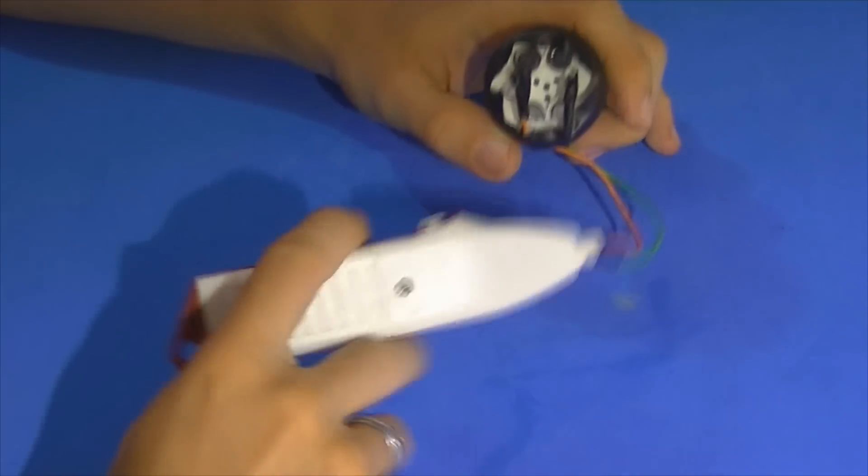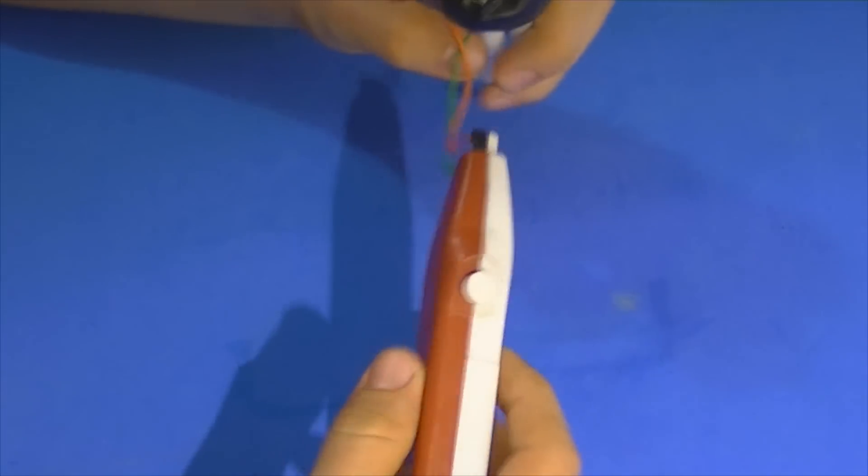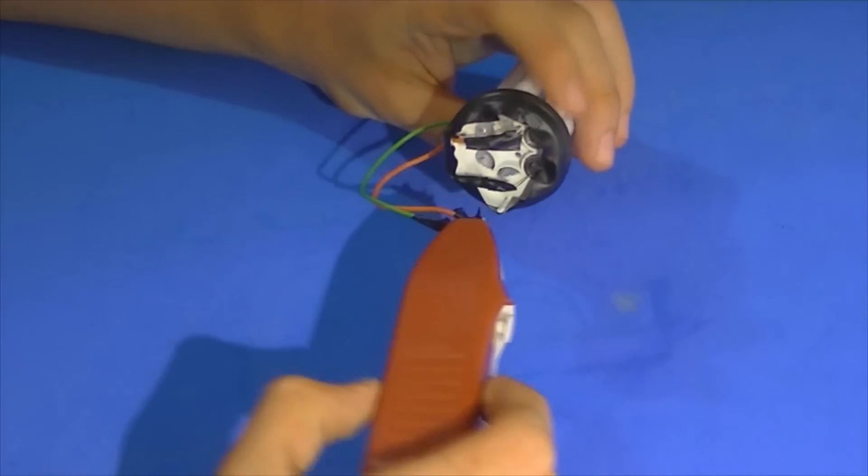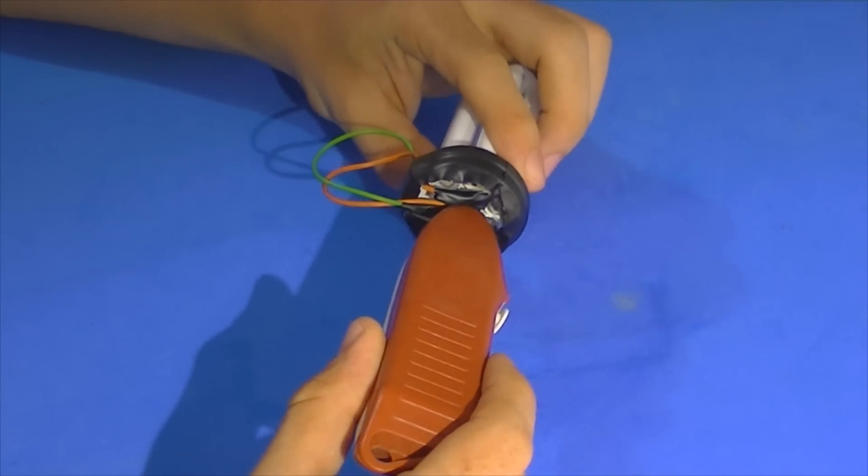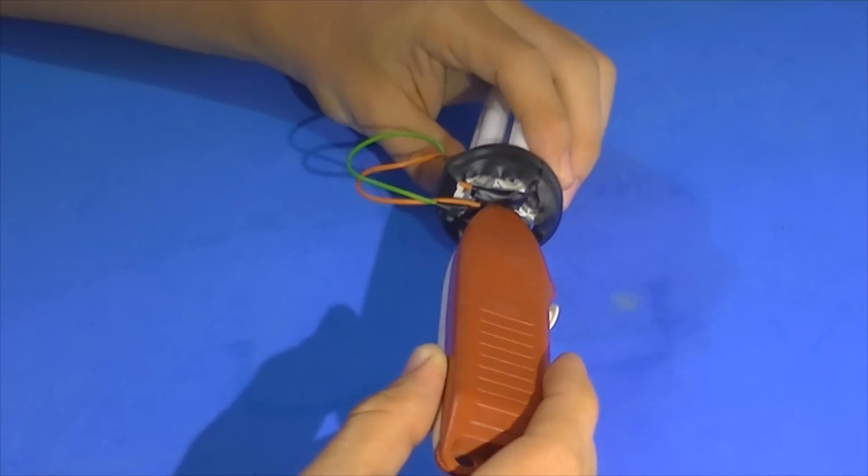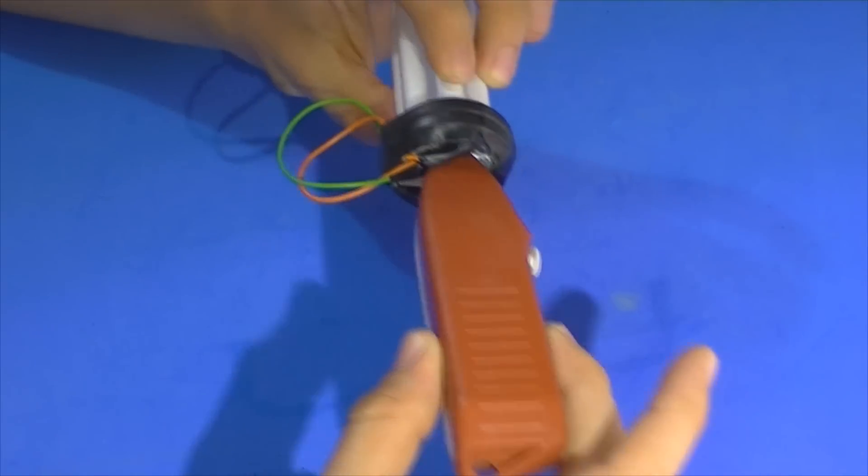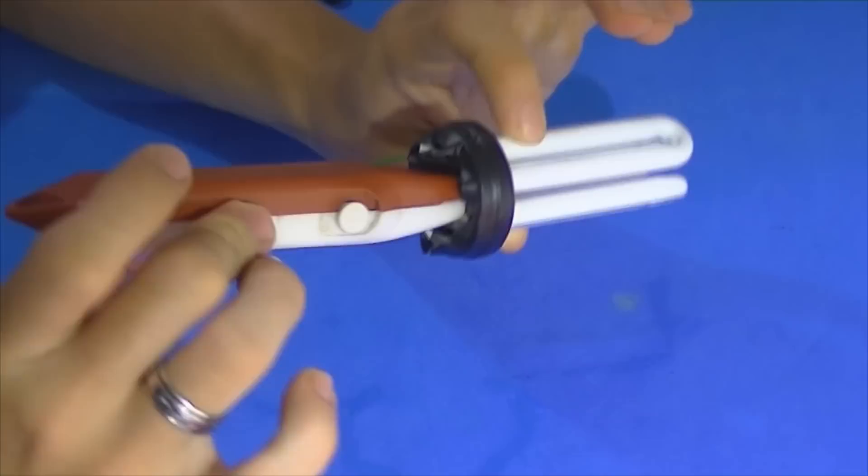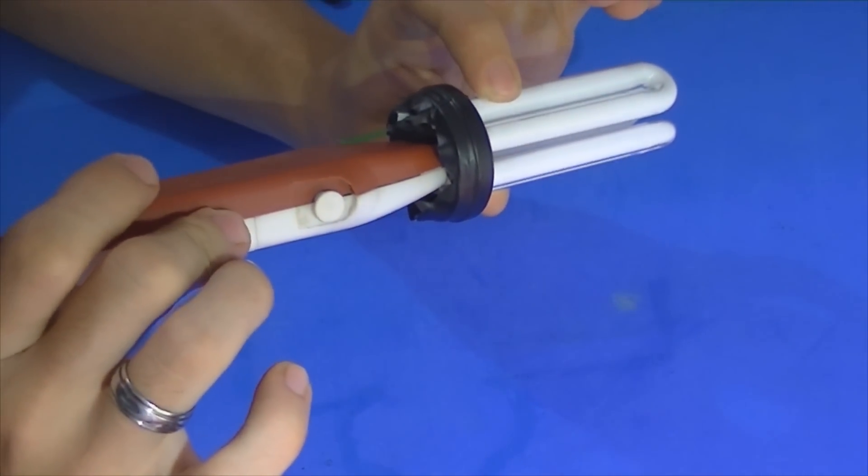Vamos passar bastante cola quente e vamos pôr o acendedor elétrico aqui dentro sem atrapalhar as ligações que a gente fez. Vamos pôr ele aqui dentro. Vamos esperar secar, vamos manter segurado assim esperando secar.